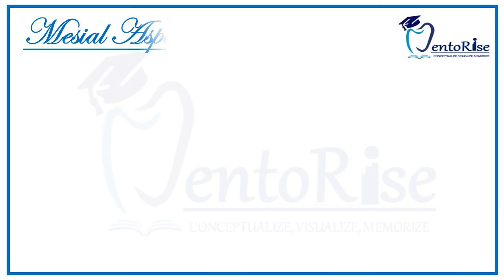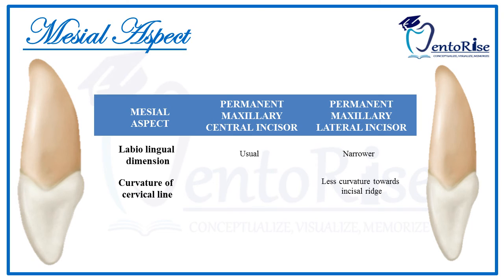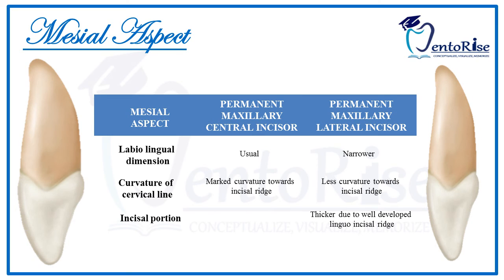Comparing the mesial aspect of the two teeth, the labio-lingual dimensions in the lateral incisor are less in comparison to that of the central incisor. The curvature of the cervical line in the lateral incisor is less in comparison to the curvature of the cervical line present on the mesial aspect of the central incisor. Due to the heavily developed lingual incisal ridge present in the lateral incisor, the incisal portion on the mesial aspect of the lateral incisor appears to be thicker in comparison to that of the central incisor.